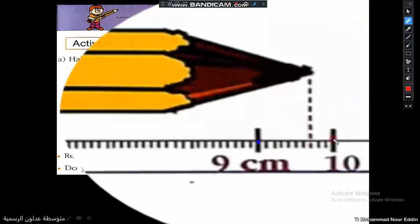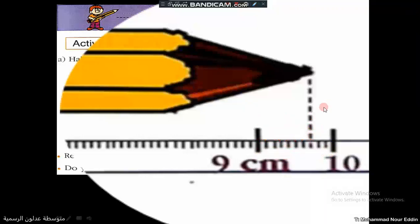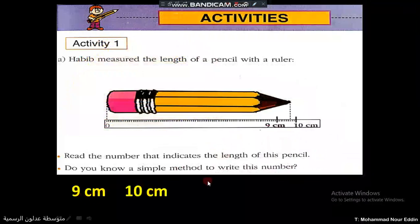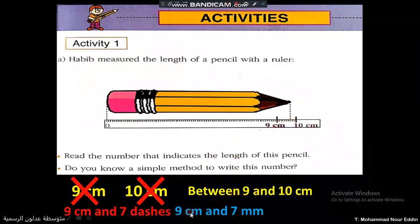If you want to measure the length of the pencil specifically, you count the dashes: one, two, three, four, five, six, and seven. For example, the length of the pencil is 9 centimeters plus seven dashes. We know it is between 9 and 10 centimeters. So you can say the length is between 9 and 10 centimeters, or 9 centimeters and seven dashes.